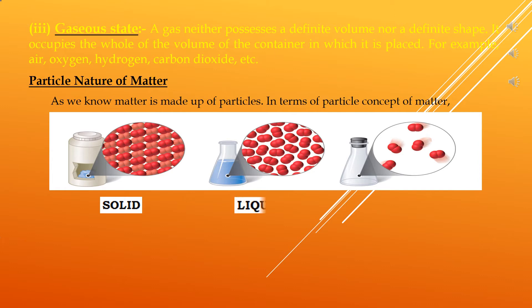In liquids, the particles are loosely packed and the empty spaces between them are relatively larger than in solids. Due to this loose packing, the attractive forces between the particles are relatively weak, which allows the particles to separate from one another. That is why liquids have a definite volume but do not have a definite shape — they take the shape of the container in which they are placed.